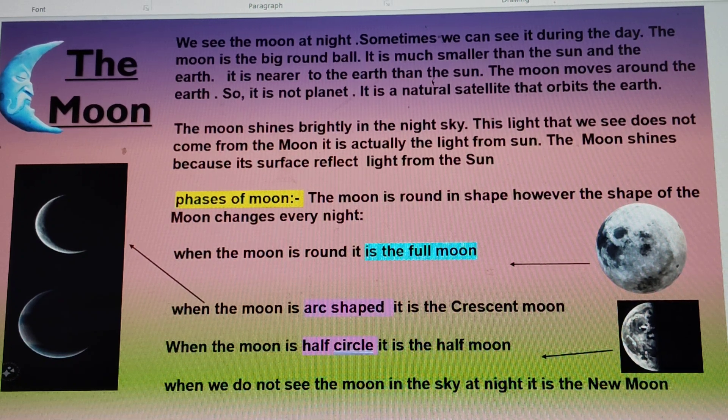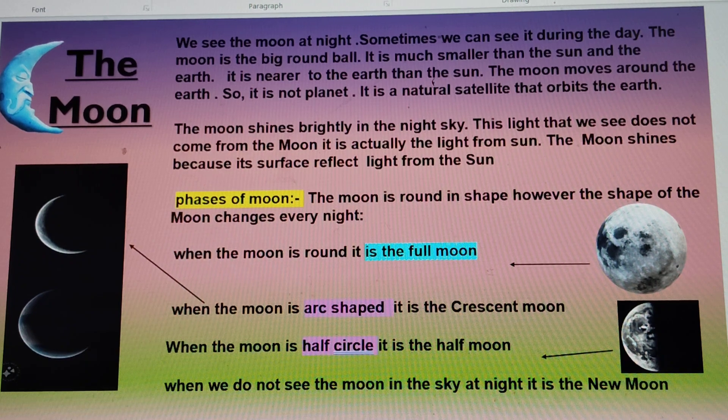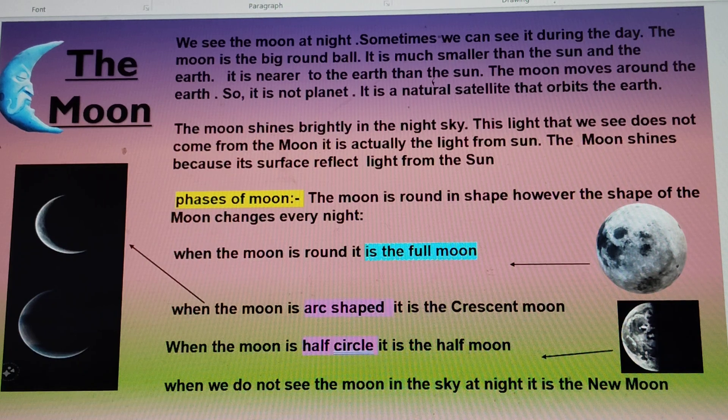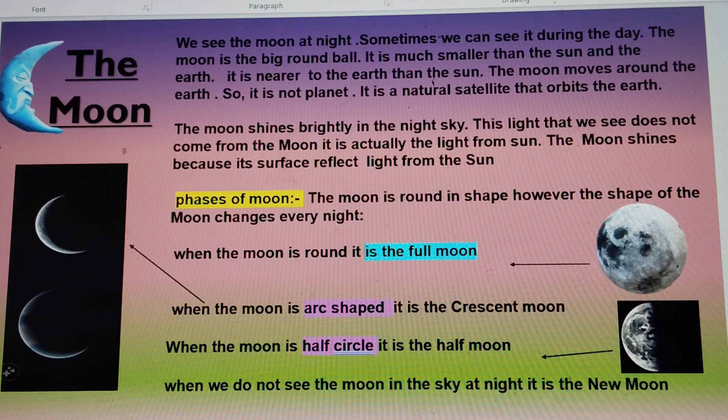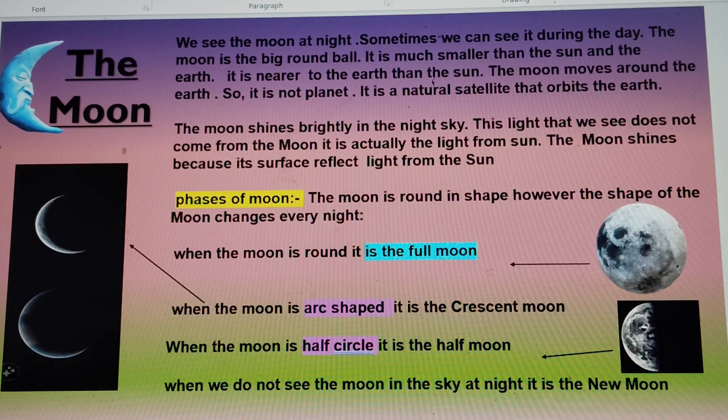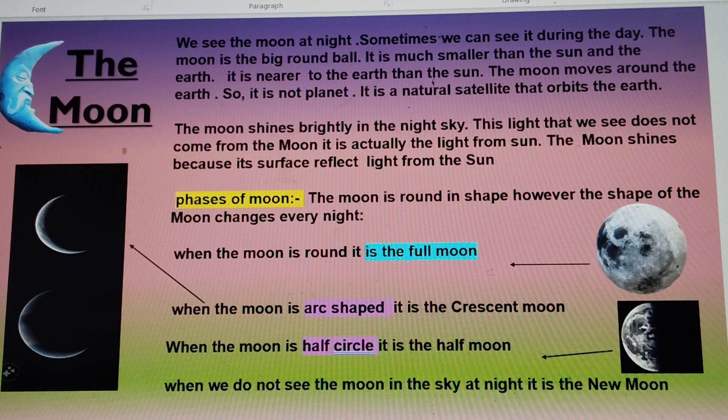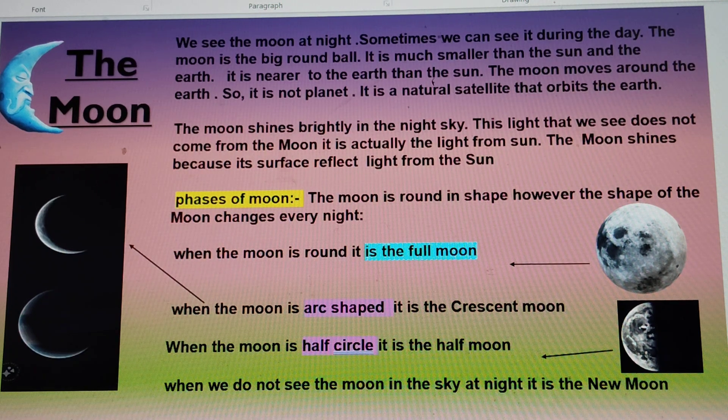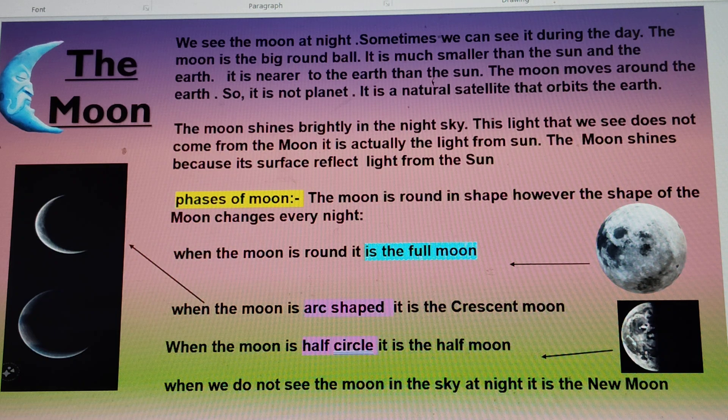The moon shines brightly in the night sky. So, you can see it at night. This light that we see does not come from moon. It is actually from the sun. The moon shines because its surface reflects the light from sun.